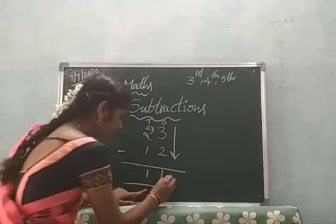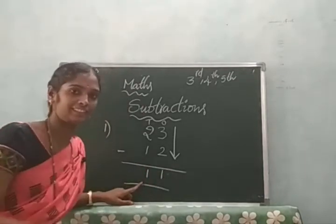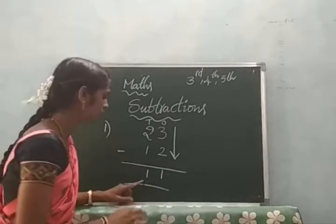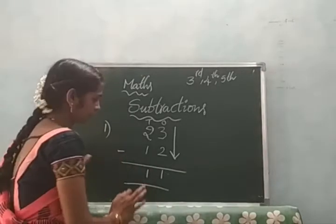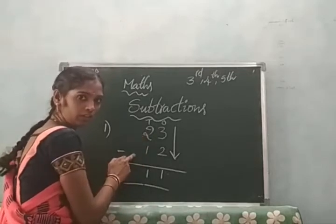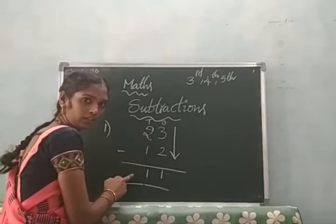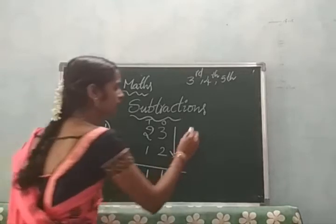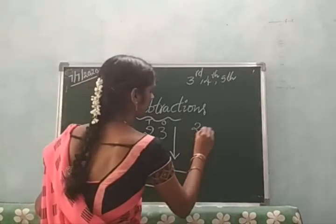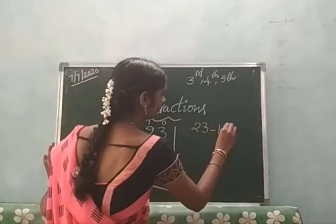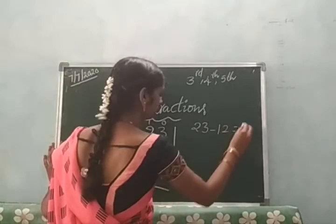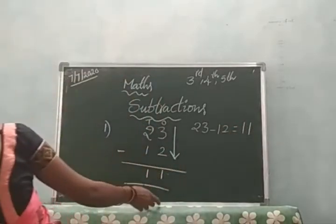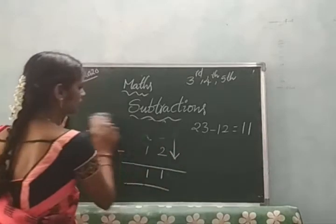11 means 1 one and 1 ten. 10 plus 1 equals 11. So 23 minus 12 is equal to 11. Okay, children — one more example.